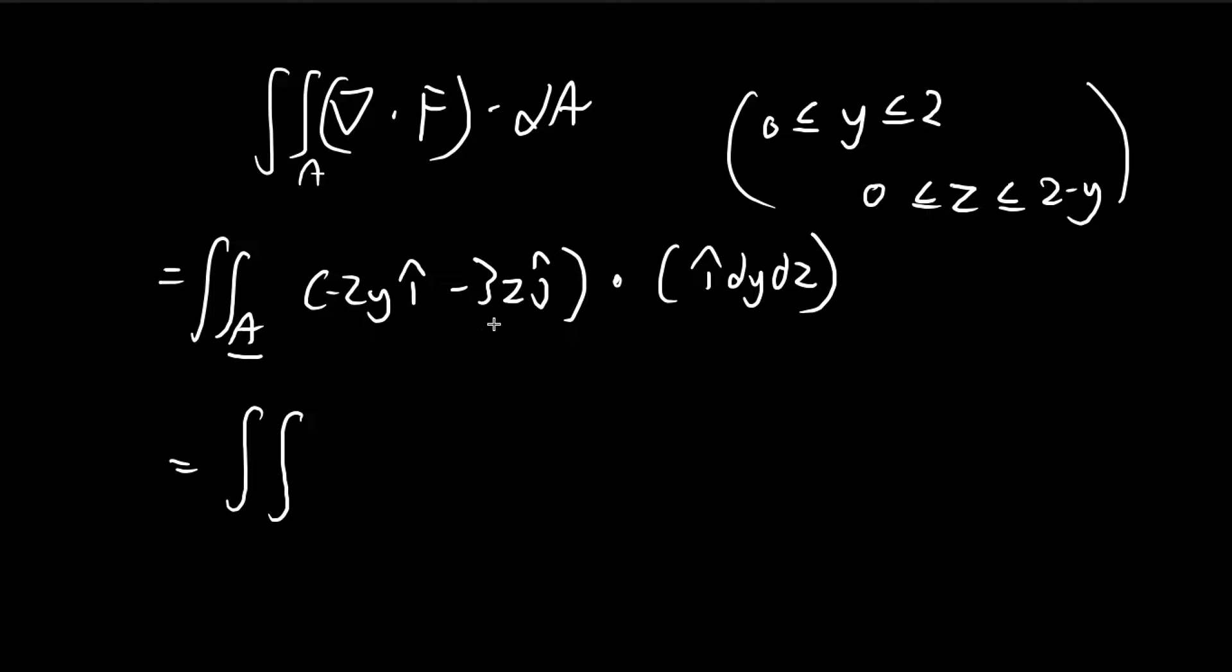Obviously this term gets eliminated, because there's only the i vector. So once we take the dot product, this is negative 2y. I'm going to integrate across dz first. And then for the bounds, z varies from 0 to 2 minus y, and y varies from 0 to 2. So at this point, this is pretty easy to evaluate.